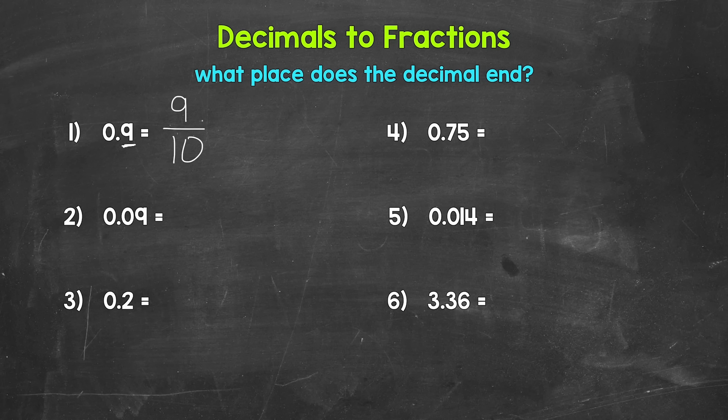Once we have the fraction, we can look to simplify if possible. Nine tenths is in simplest form — the only common factor between 9 and 10 is 1, so this fraction is in simplest form. If we look at the decimal, we can read that as nine tenths, and looking at the fraction, we can read that as nine tenths. These are equal — one is just a decimal, the other a fraction.